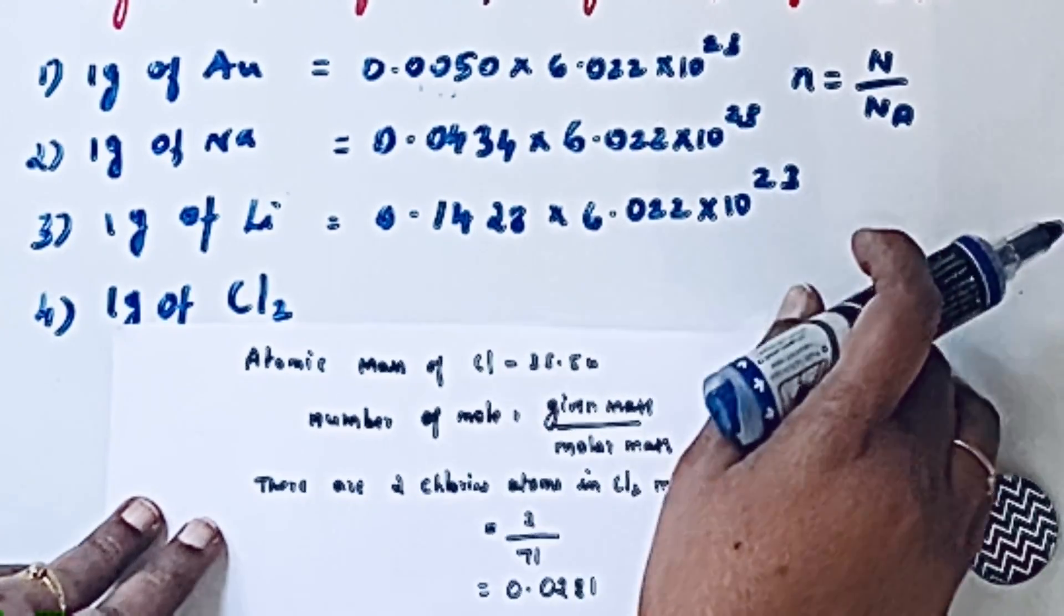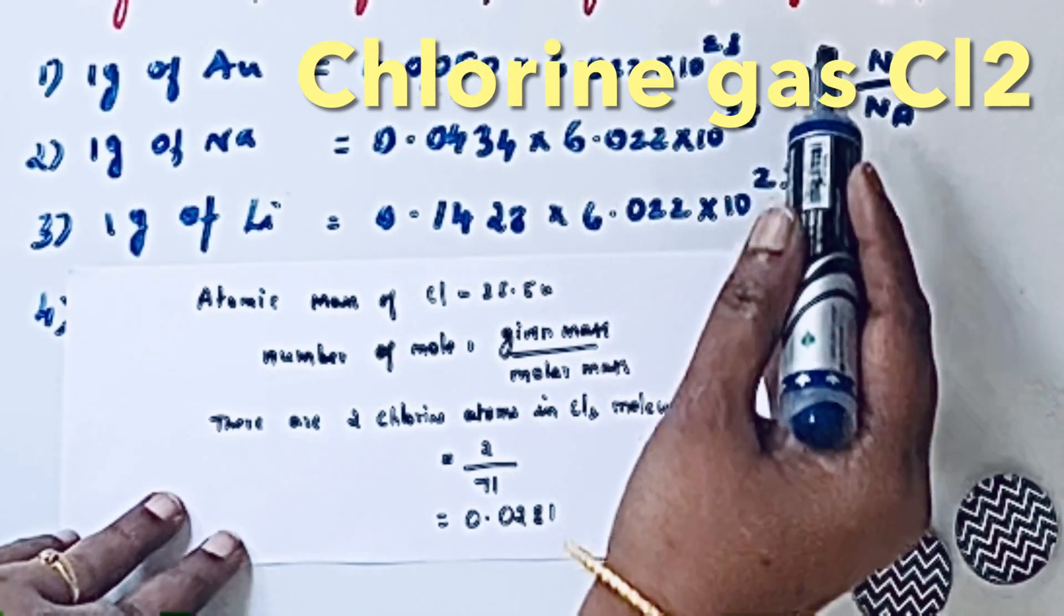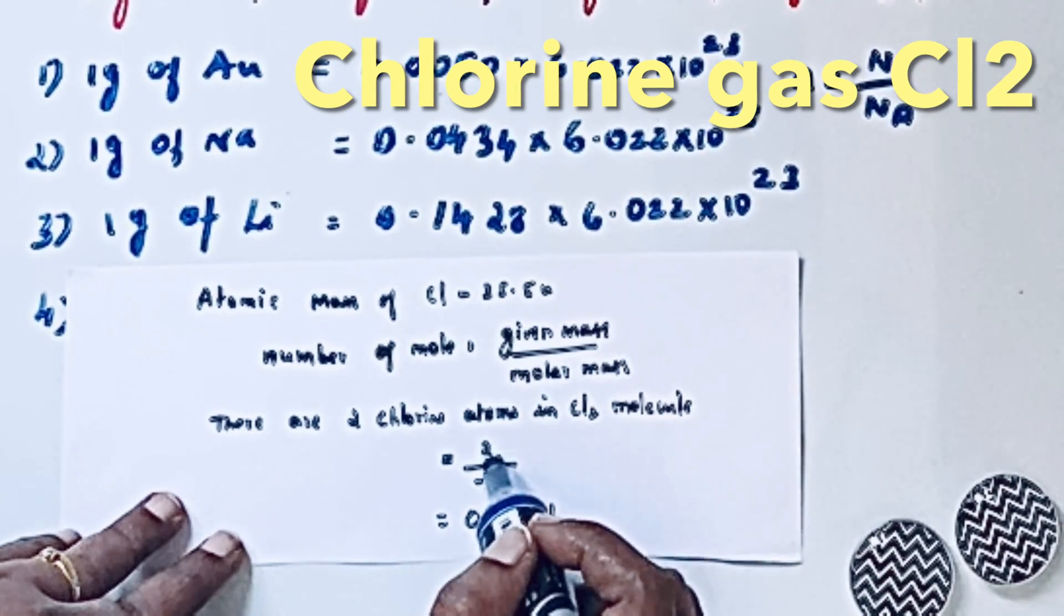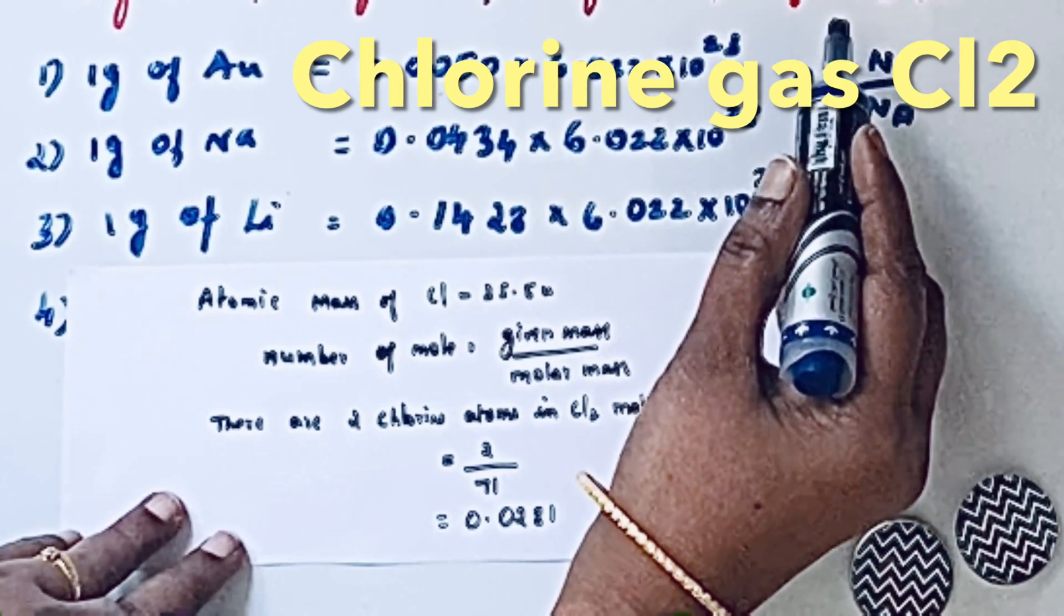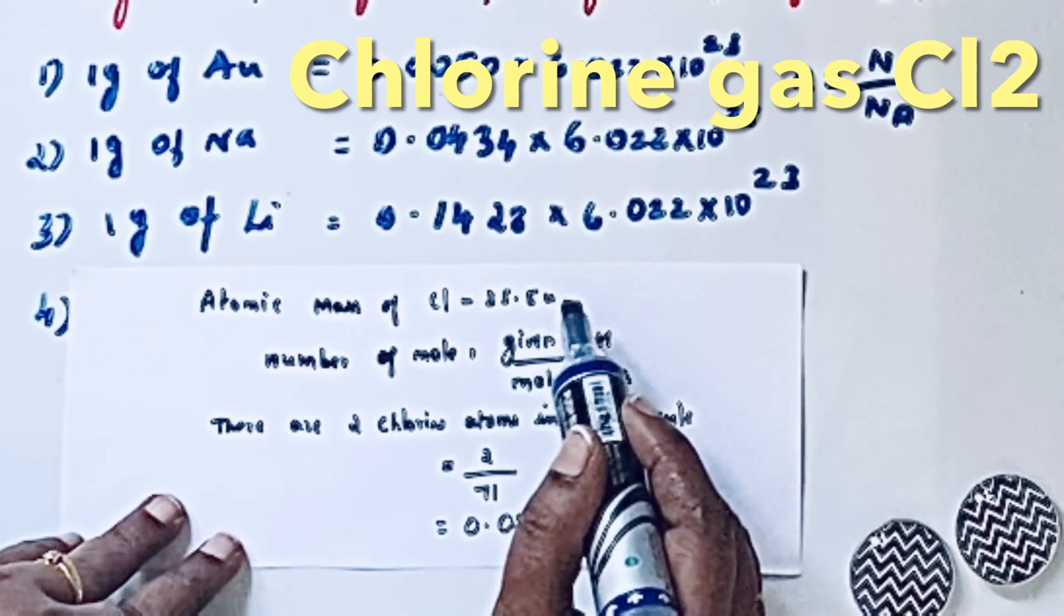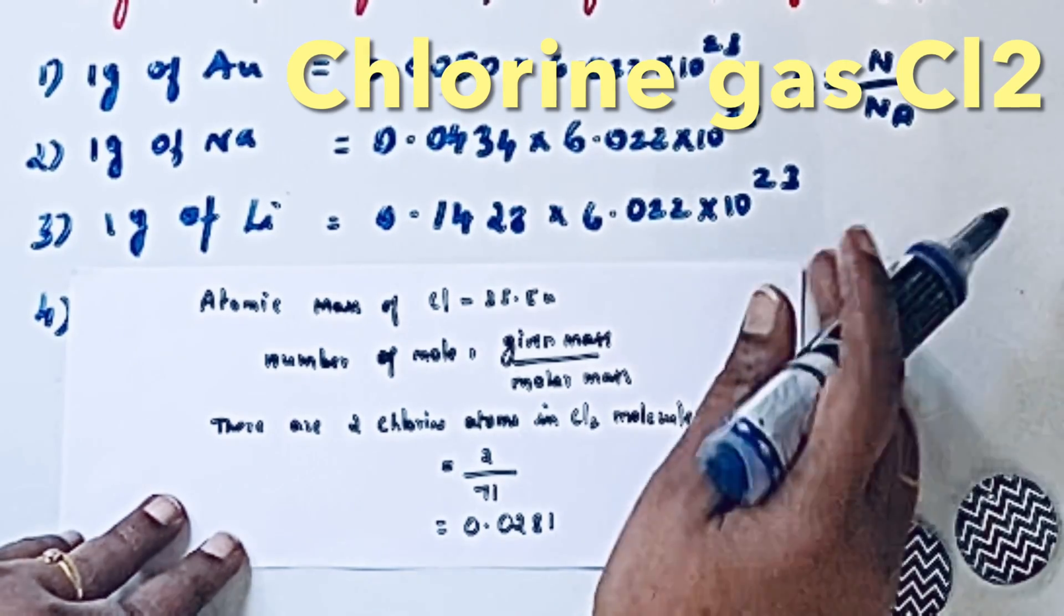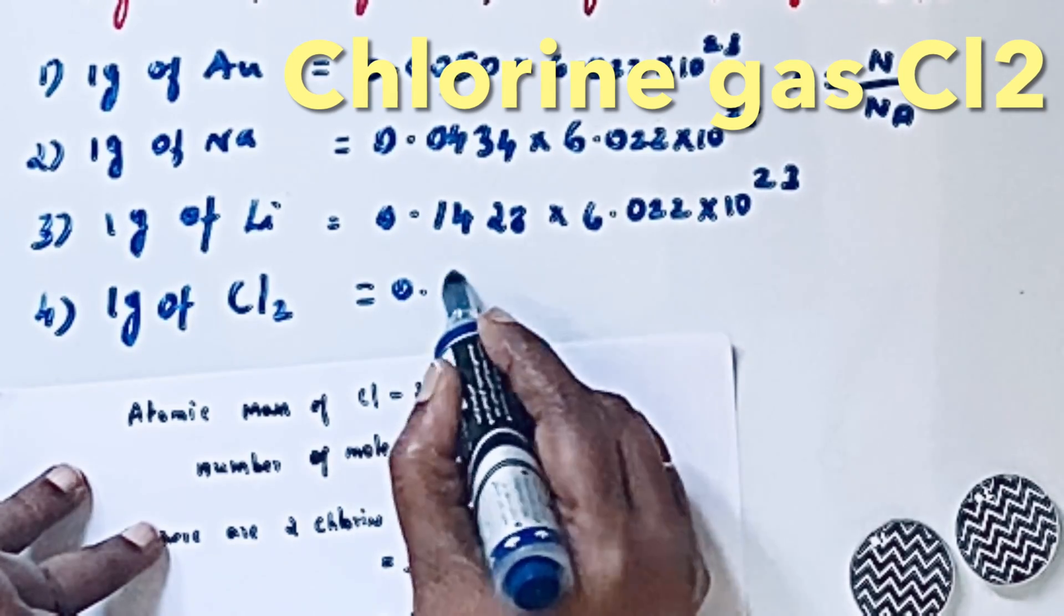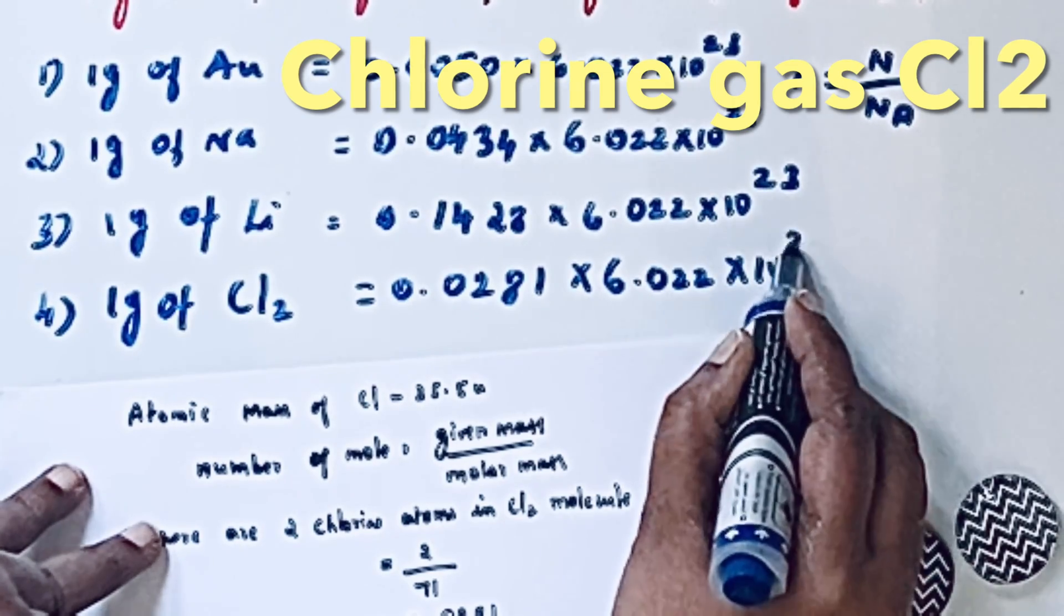There are 2 chlorine atoms in Cl2 molecule. So we have to write the given mass as 2, because for 1 atom it is 1 gram. In the same way, atomic mass for 1 chlorine atom is 35.5 u, but here we have 2 chlorine atoms. So 35.5 plus 35.5, we will get 71. If you solve, we will get 0.0281, so we can write 0.0281 times 6.022 times 10 raised to 23.